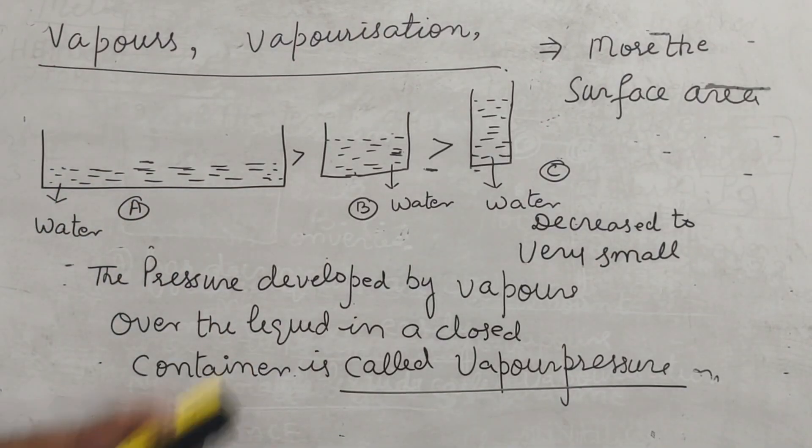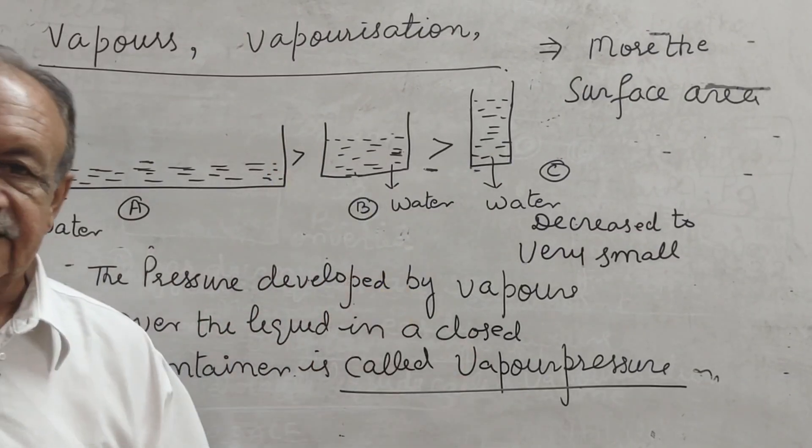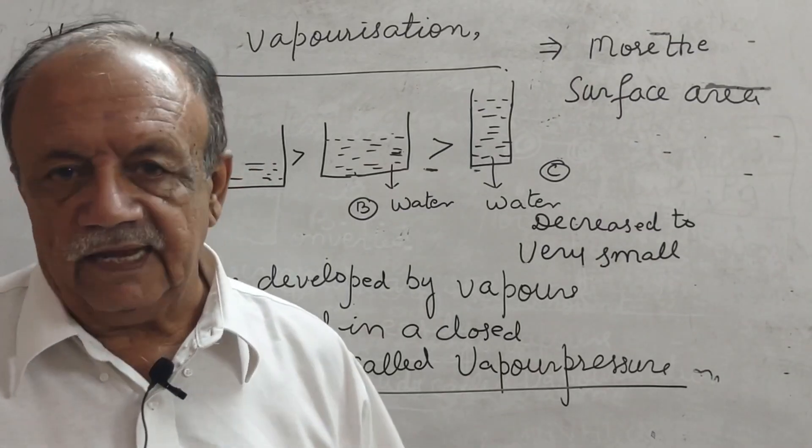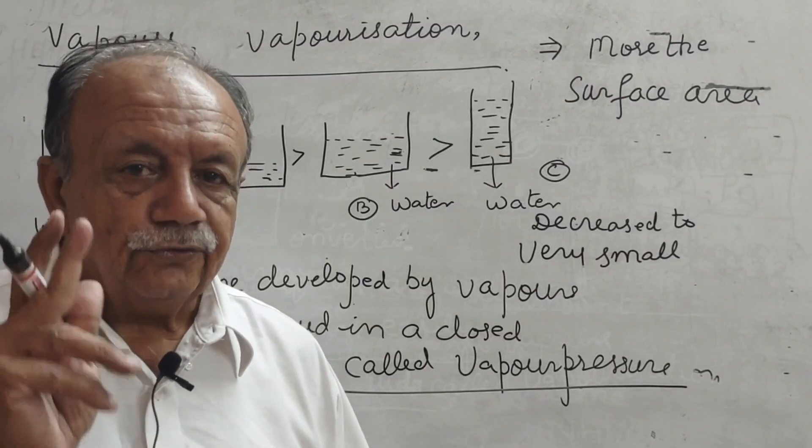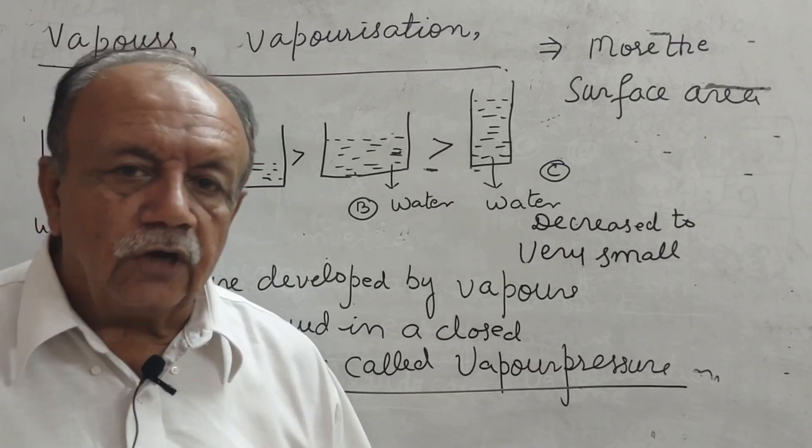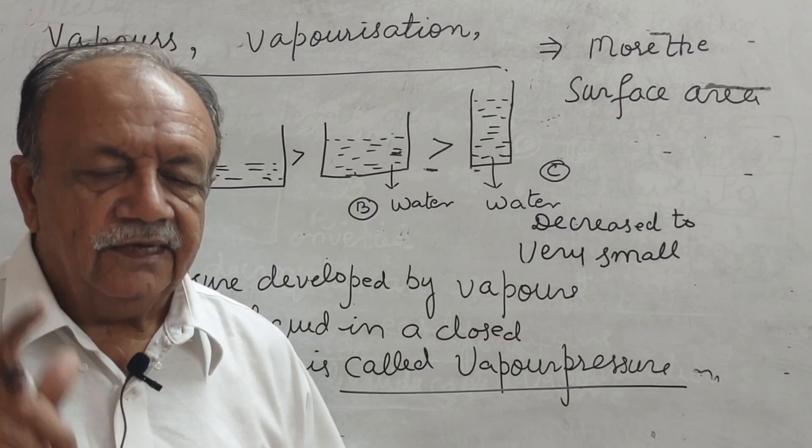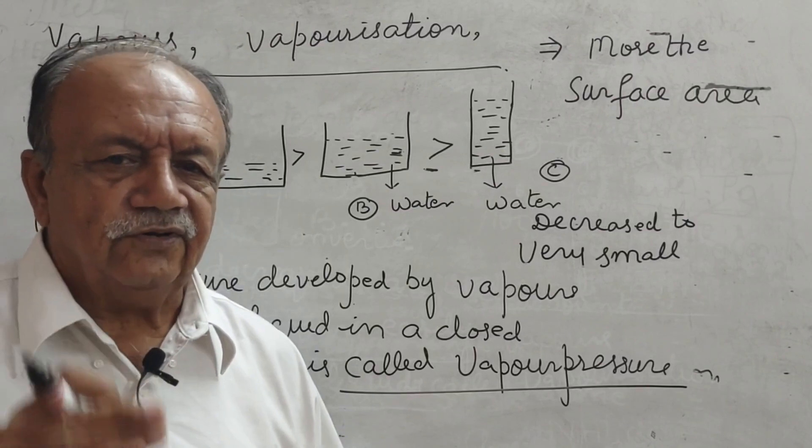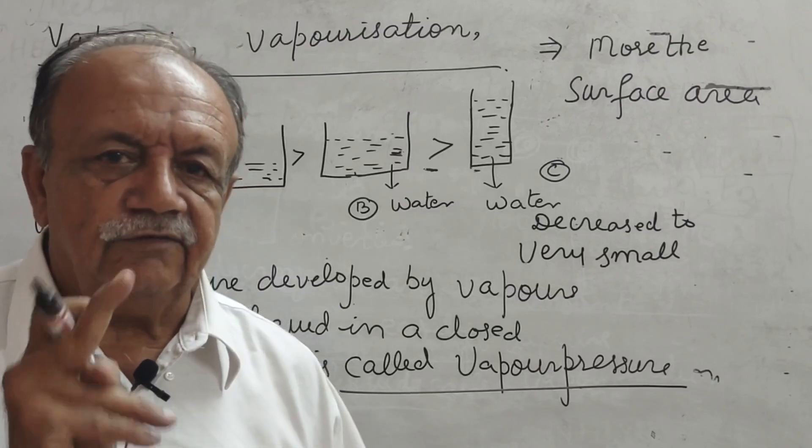Now, dear students, in first chapter of ninth class, we started with three states of matter, solid, liquid, and gas. Solids do not flow, but two types of solids are there. True solids and not true solids. Not true solids are also called amorphous solids. Some amorphous solids can flow.